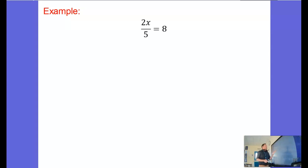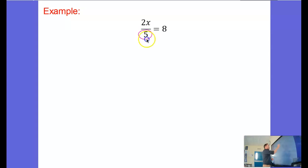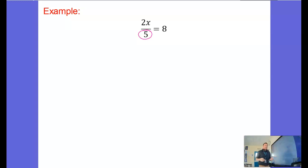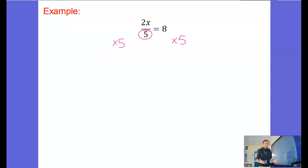So we've got 2 multiplied by x then divided by 5 equals 8. So we're going to unpick that. Whenever you see fractions in equations, start to think how do I get rid of that divide by 5? What's the inverse of divide by 5? And as soon as you get rid of the fractions, generally the equations become easier to solve. So we're going to multiply by 5 on both sides of this equation because the opposite of divide by 5 is times by 5. So to get rid of that divide by 5, we multiply by 5.